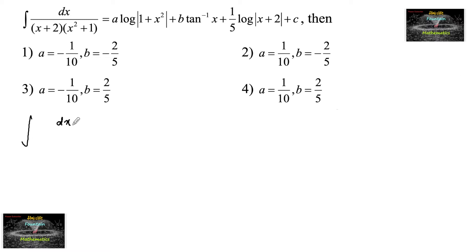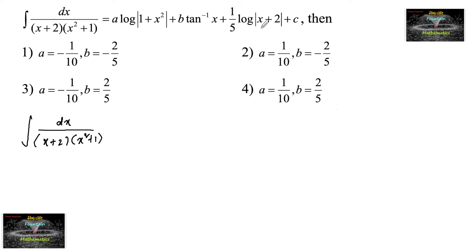The integral dx upon (x+2)(x²+1) is given as a·log|1+x²| + b·tan⁻¹x + (1/5)·log|x+2| + c. We need to find the values of a and b.